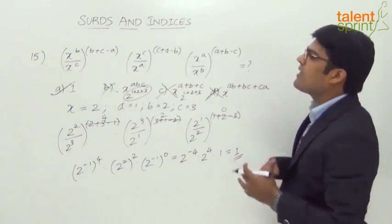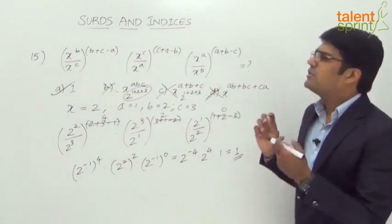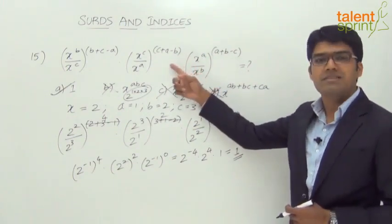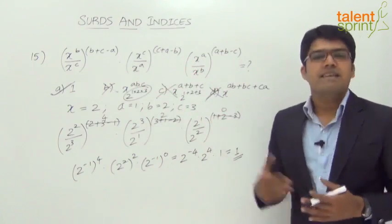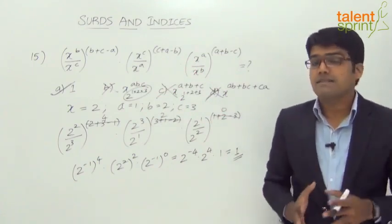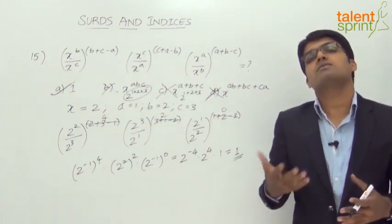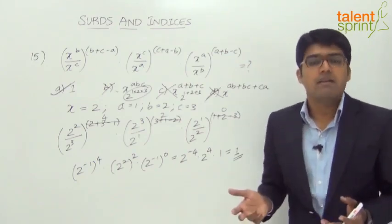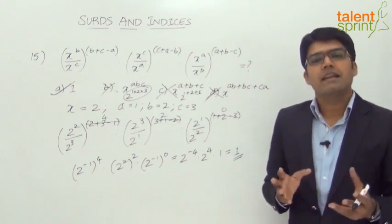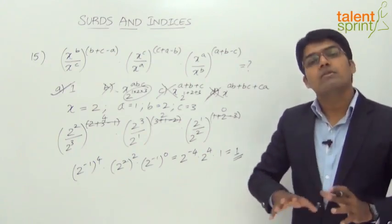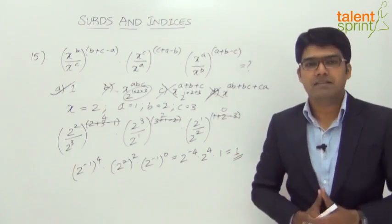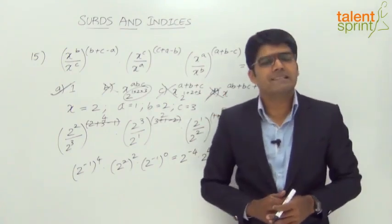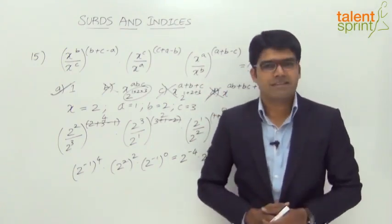This is one way of answering such questions: substitute values for all variables in both the given expression and the answer options, and see which option satisfies. Be careful — in some cases more than one option may satisfy, so you must change values and check again. Choose values so that calculations are not complex and no more than one option satisfies. Otherwise, apply the laws of indices directly.